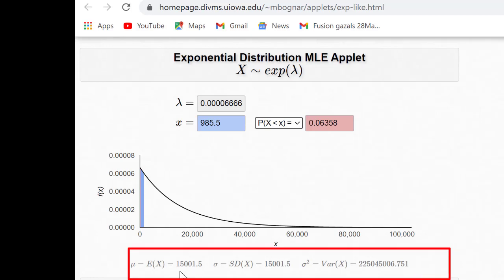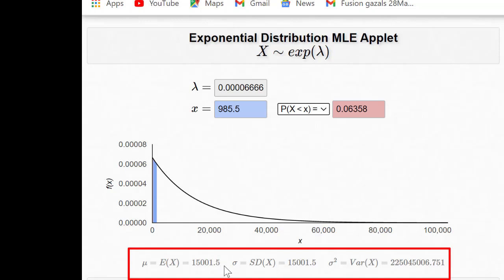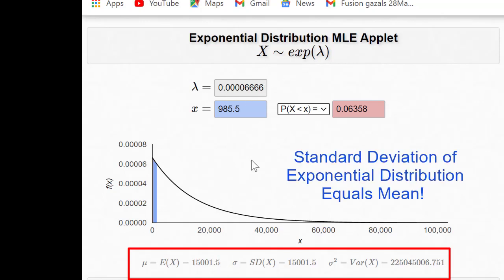If I choose the x less than x choice then I get 0.0635 as the probability of failure. Below the graph you can see that a mean or expected value is 15,000. The slight difference is because we could not choose very large number of decimals in lambda.